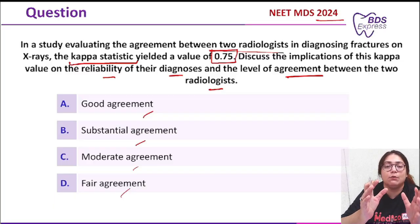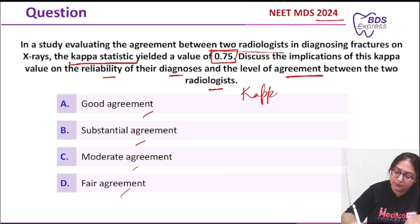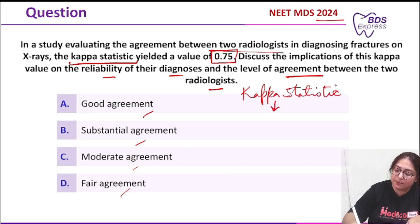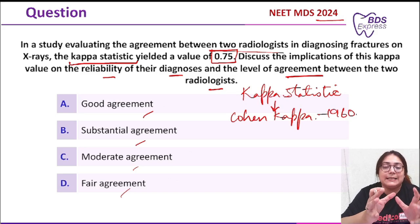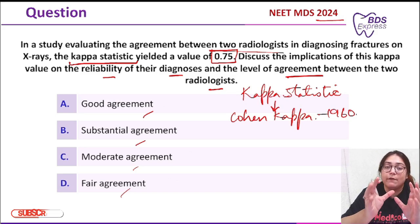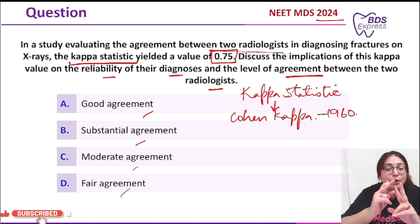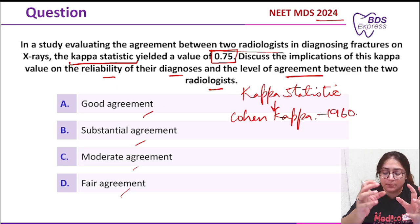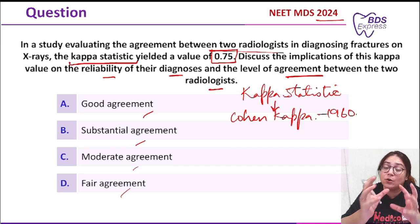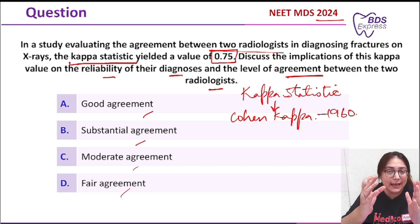First of all, you should know what the kappa statistic is. It was given by Cohen's Kappa in the year 1960. Basically, it is a statistical measure of inter-rater reliability between two raters. In this question, the two raters are radiologists, and we want to confirm the agreement or disagreement on diagnosing fractures on the x-rays.